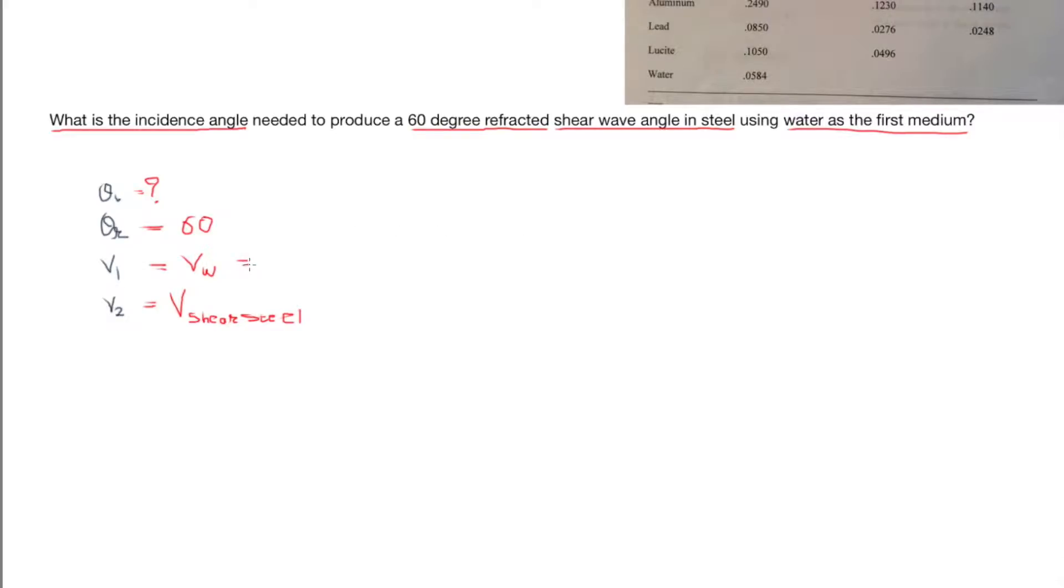So from the table up there, velocity of water is 0.0584, and velocity of steel in shear mode is 0.1270. This is in inches per microsecond.